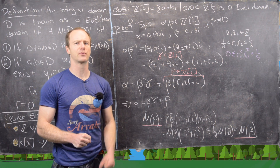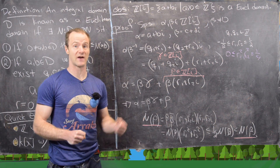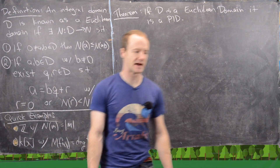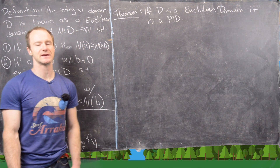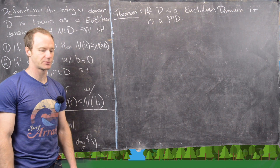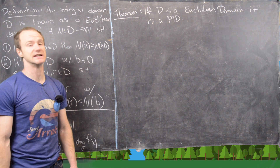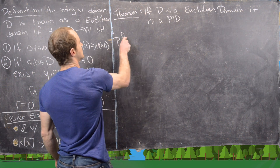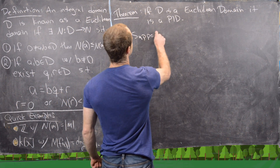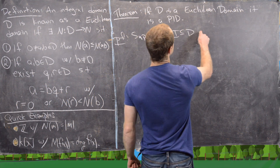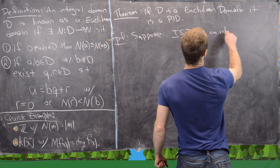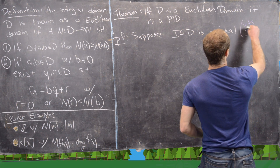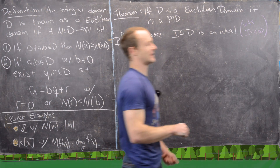Now we want to prove that every Euclidean domain is a PID. This is nice because it will also prove that the Gaussian integers form a PID. Suppose I is an ideal in D — we want to show it is principal, that is, generated by a single element a.